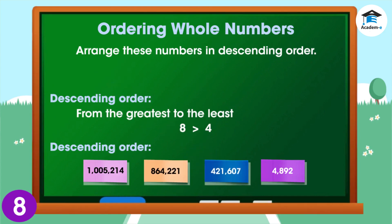The arrangement in descending order therefore is as follows: 1,005,214; 864,221; 421,607; 4,892.